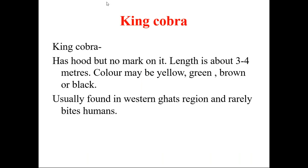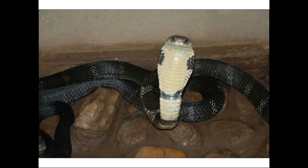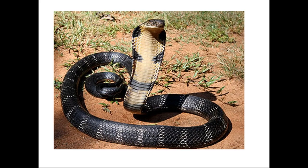King cobra is different from cobra. King cobra has a hood but there is no spectacle mark on it — very important. Only cobra has a spectacle mark, whereas king cobra does not. The length is about three to four meters, color can be yellow, green, brown, or black, and it is usually found in the Western Ghats region. It rarely bites humans.